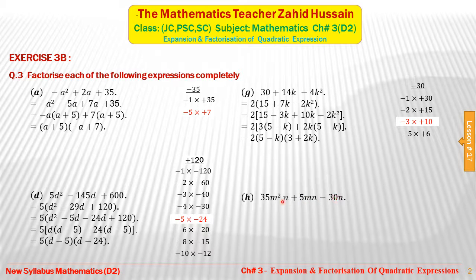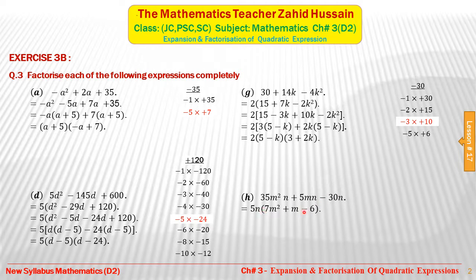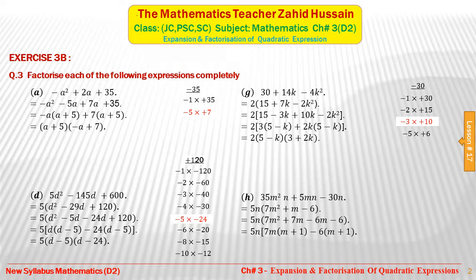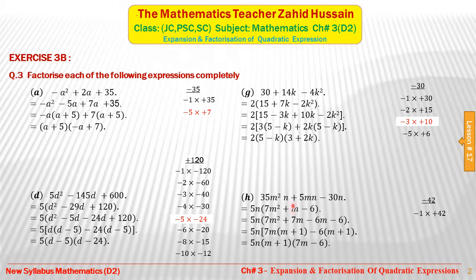Part H: again there is something common in all three terms — 5n. Taking 5n common and dividing each term by 5, we are left with 5n(7m² plus m minus 6) inside the bracket. We multiply the coefficient of m², which is 7, by the constant minus 6: 7 times minus 6 gives minus 42. Because this is negative, the two factors have different signs; since the middle term is positive, the larger factor is positive. Factor pairs: minus 1 & plus 42, minus 2 & plus 21, minus 3 & plus 14, minus 6 & plus 7. The pair that multiplies to minus 42 and adds to plus 1 is minus 6 and plus 7.